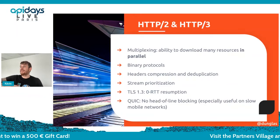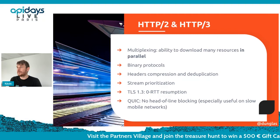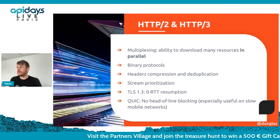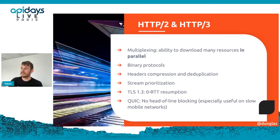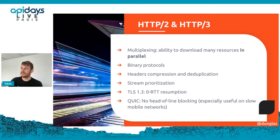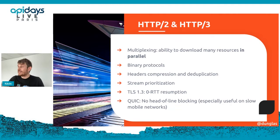These protocols are now binary, so they're faster. Headers are now compressed and deduplicated — if you send 10 requests with the same HTTP header like User-Agent, it will be sent only once. There's also support for prioritization — you can say this resource must be downloaded before others because it's blocking rendering. For HTTP 3, TCP has been replaced by QUIC, designed especially for performance on mobile networks, which fixes issues including head-of-line blocking.